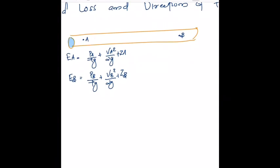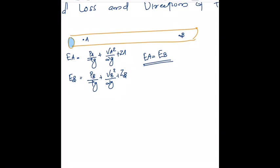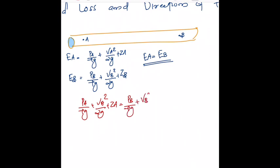These are the energy equations. The total energy at A is the sum of pressure energy, kinetic energy, and potential energy, and similarly for B. From the law of conservation of energy, E_A equals E_B. However, this concept that E_A equals E_B is valid only for ideal fluids: p_A/ρg + v_A²/2g + z_A = p_B/ρg + v_B²/2g + z_B.